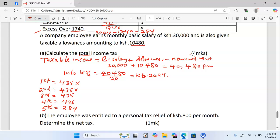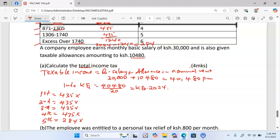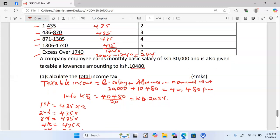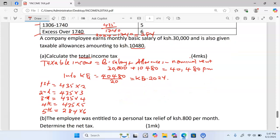Now that we have known the amount to tax in each bracket, we can now go and calculate the taxes. The rate of tax in the first bracket is 2, second is 3, third is 4, fourth is 5, and lastly we have 6. 435 times 2, you get 870. 435 times 3, you get 1305. 435 times 4, you get 1740. 435 times 5, you get 2175. And lastly 284 times 6, you get 1704.